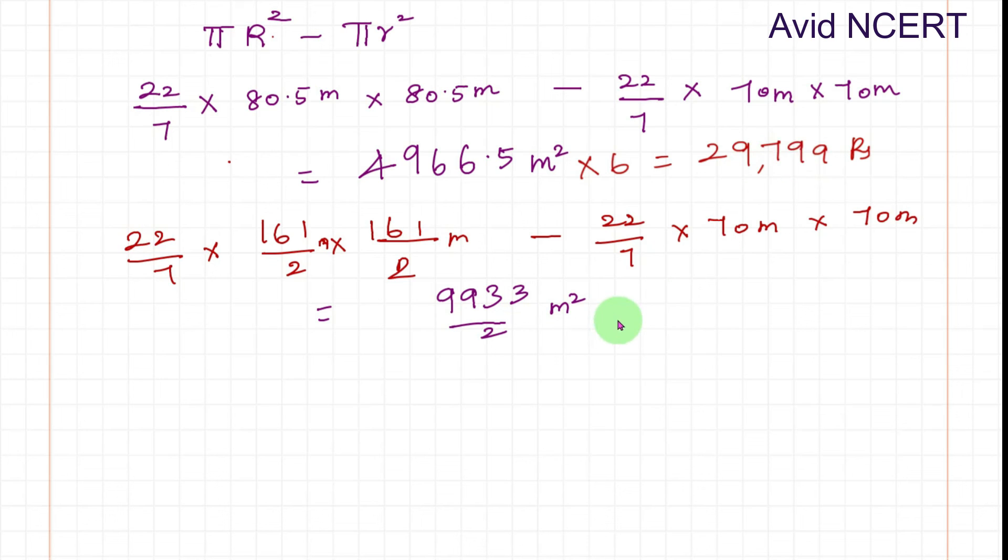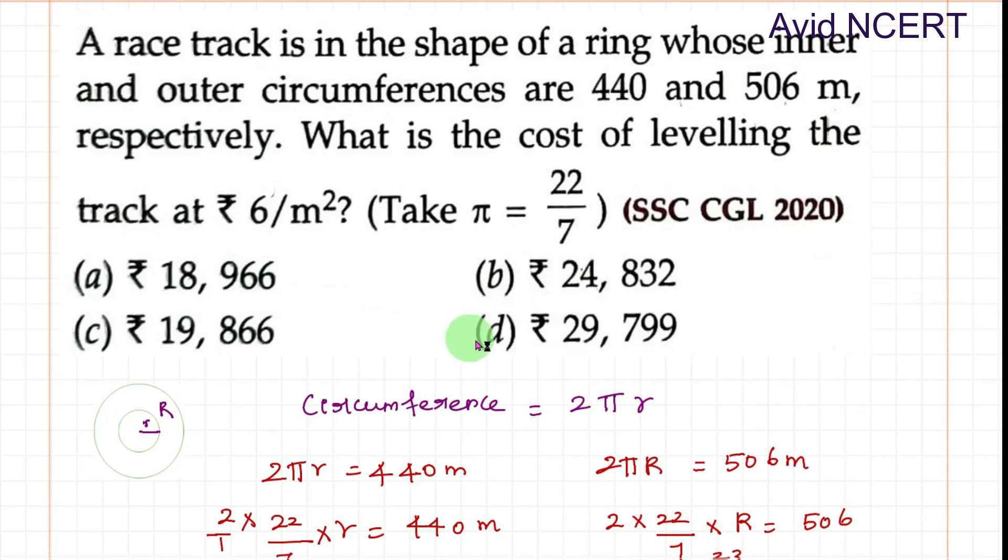Times 6 which equals 29,799 rupees. And in this case, 9933 divided by 2 times 6, so 2 cancels 3, which equals 29,799 rupees. The cost of leveling the track is rupees 29,799.